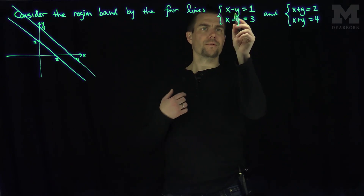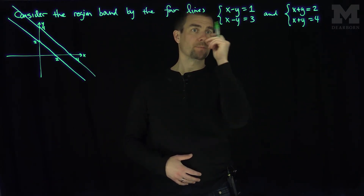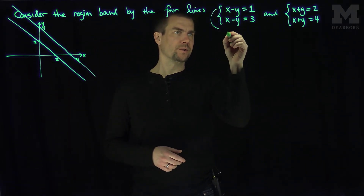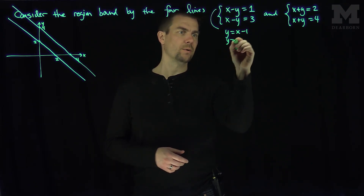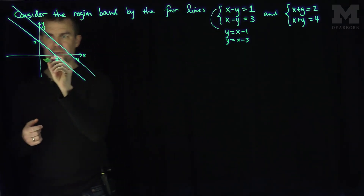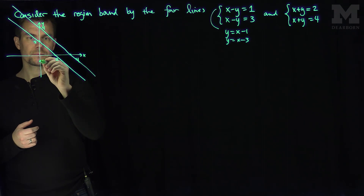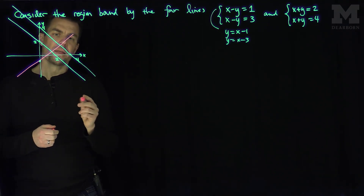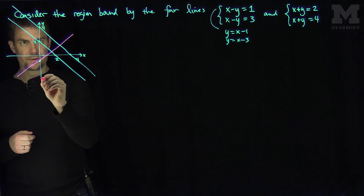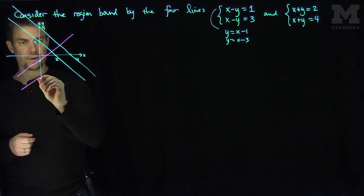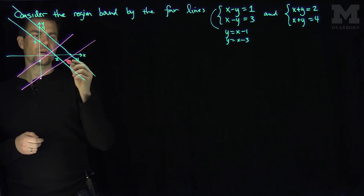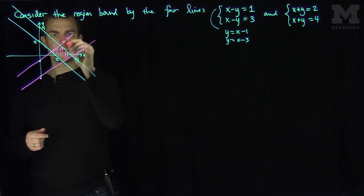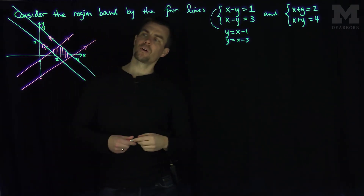The first equation x minus y equals one is the same as y equals x minus one, and x minus y equals three is the same as y equals x minus three. So y equals x minus one goes down one unit on the x-axis with a slope of one, and y equals x minus three goes down by three units, a bit further down. The resulting region is a parallelogram because this pair of lines is parallel to each other, and that pair is parallel to each other.